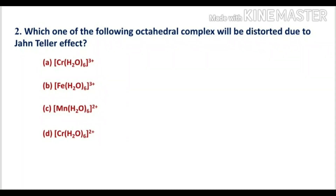Now we go to question number 2: Which one of the following octahedral complexes will be distorted due to the Jahn-Teller effect? According to the Jahn-Teller effect, any non-linear molecular system with a degenerate electronic state will be unstable. To attain stability, a slight distortion will take place in the degenerate electronic state by splitting so as to remove degeneracy.